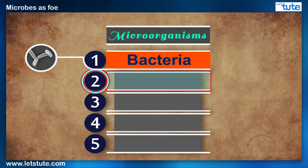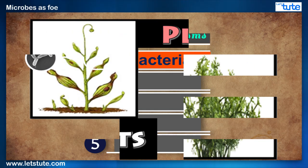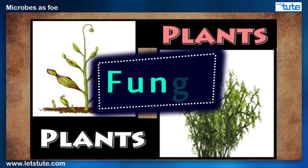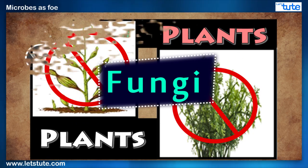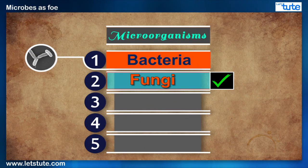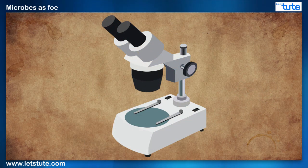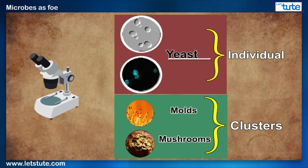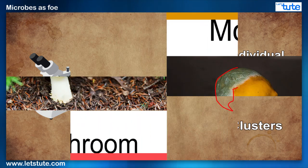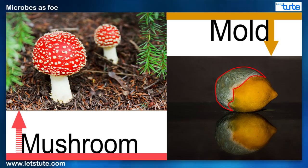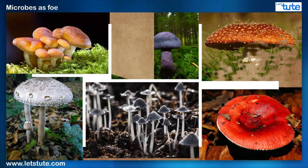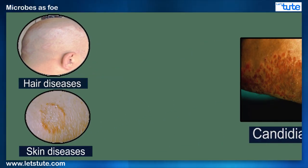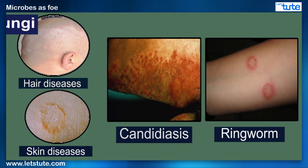We'll now move on to the second group of microbes which were once confused with plants due to their appearance — we're talking about fungi. They are single-celled entities and exist either individually, like yeast for example, or in clusters such as molds or mushrooms, which are visible to the human eye and are present in a variety of shapes, sizes, and types. Hair and skin diseases, candidiasis, and the ringworm infection are caused by fungi.